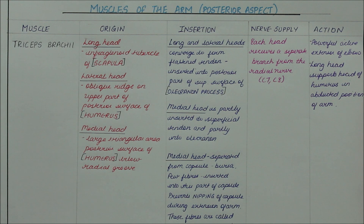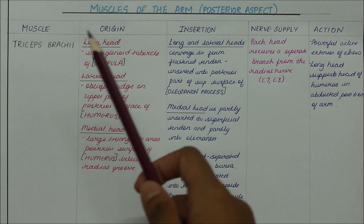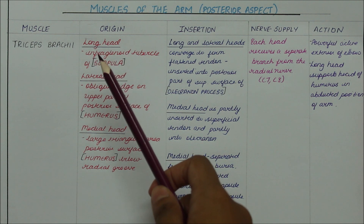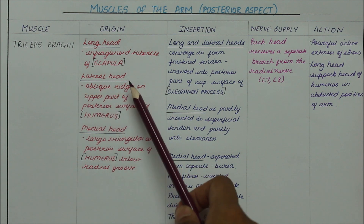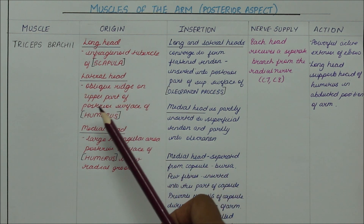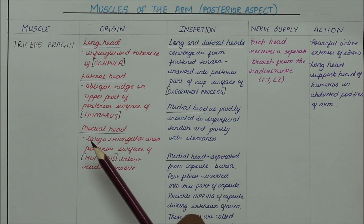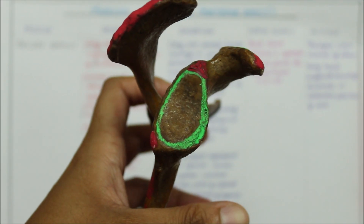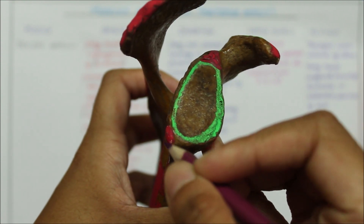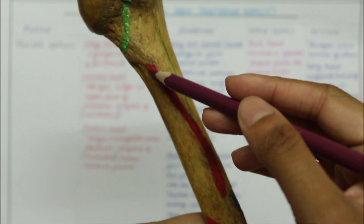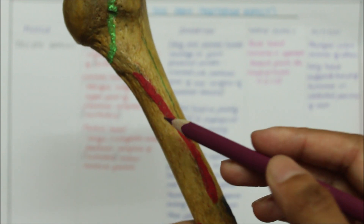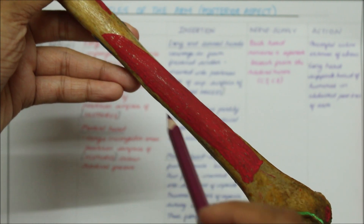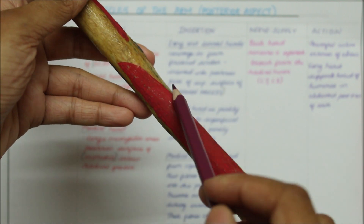Moving on to the muscles of the posterior aspect of the arm, we have the triceps brachii. It has three heads of origin: the long head, the lateral head and the medial head. The long head originates from the infraglenoid tubercle of the scapula. The lateral head originates from the oblique ridge on the upper part of the posterior surface of the humerus, while the medial head originates from the large triangular area on the posterior surface of the humerus below the radial groove, as you can see right here.